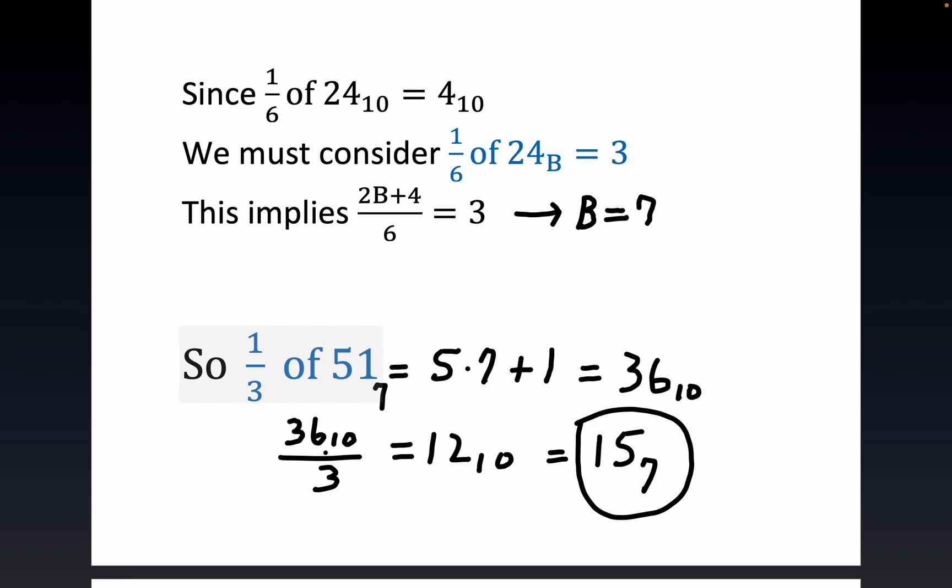And then 36 divided by 3 is certainly 12 base 10. But this would, 1, 5 base 7 is really equal to 7 plus 5, if you expand it out, which is certainly 12 base 10. It's a little, the notation is slightly awkward.